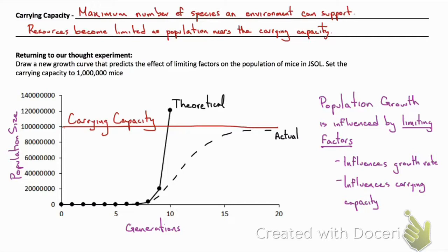Limiting factors influence the carrying capacity or the maximum number of organisms that can survive stably within an ecosystem.